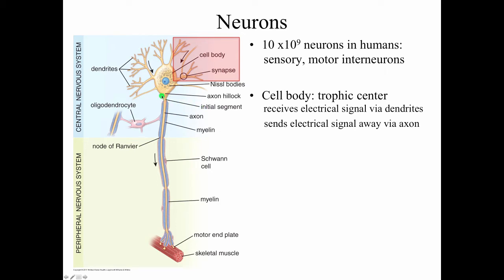We can talk about the axon hillock and the initial segment of the axon — this is where action potentials are generated. If we talk about neurons in the central nervous system, we talk about oligodendrocytes which make myelin and surround the axons to insulate them. If we talk about neurons in the peripheral nervous system, we talk about Schwann cells as the cells that myelinate the axons. We also talk about the node of Ranvier and neuromuscular junctions in the motor end plate.